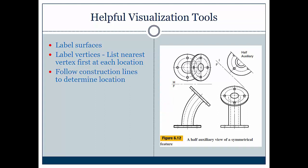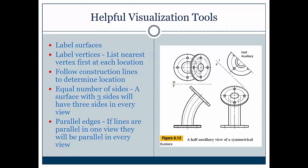Use construction lines to determine locations. And remember that equal number of sides, meaning a surface with three sides will have three sides in every view. Parallel edges: if lines are parallel in one view, they will be parallel in every view.